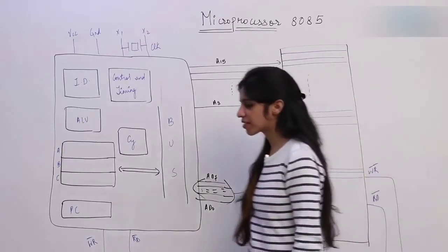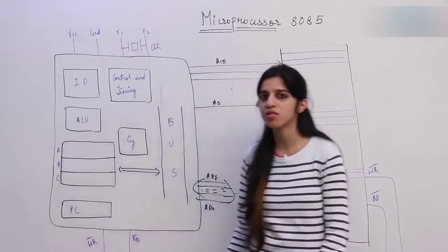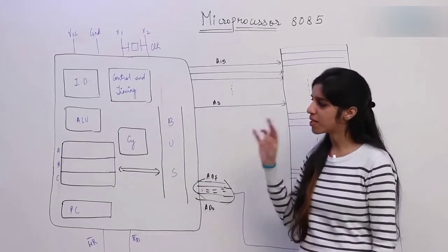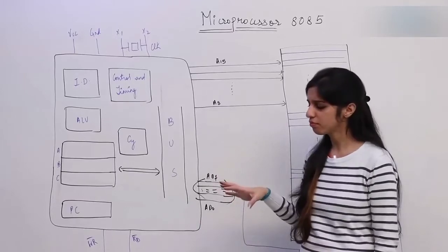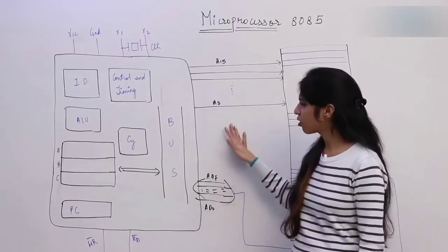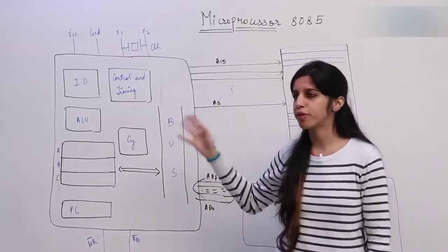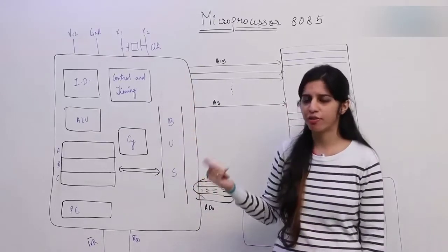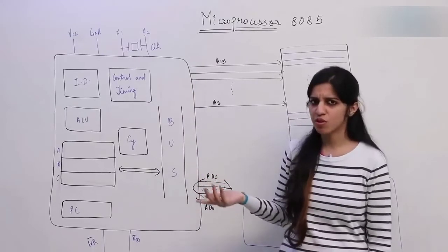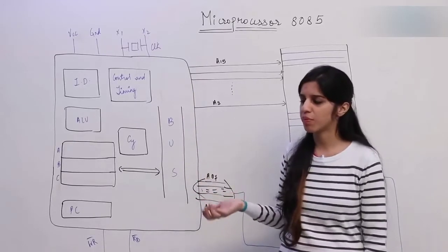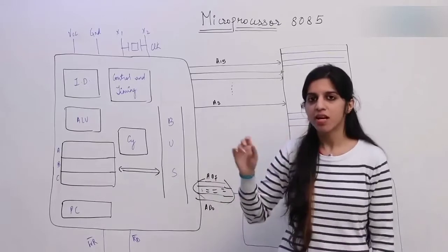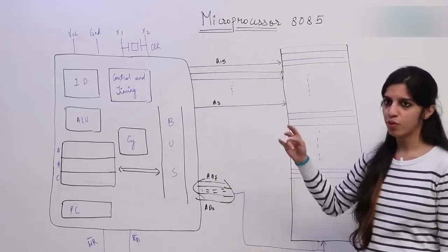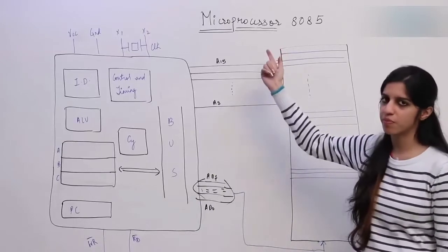In UGC NET exams they are going to ask you generally one or two questions from this topic, and very basic questions — they are not going into a lot of depth from this subject. If you just look at interrupts, flags, and instruction sets, they are not asking about timing diagrams. If you just look at these topics carefully you can get through. This is a very nice, scoring subject.